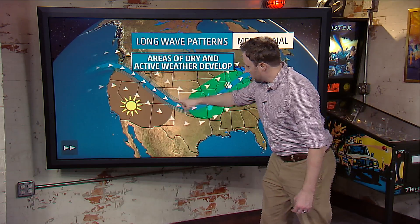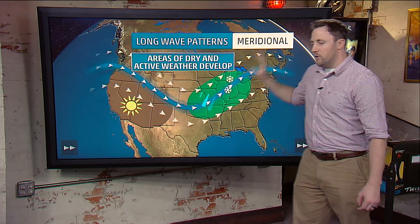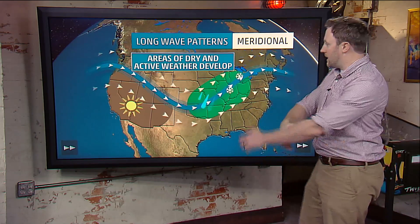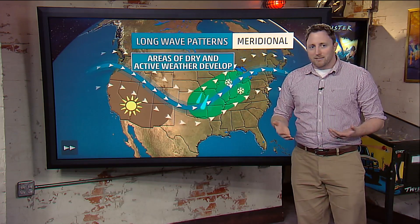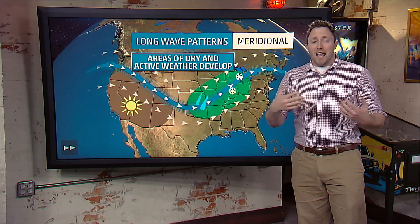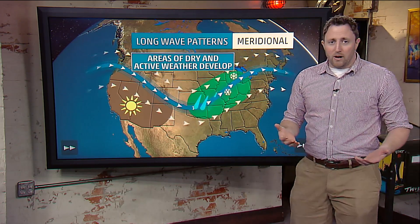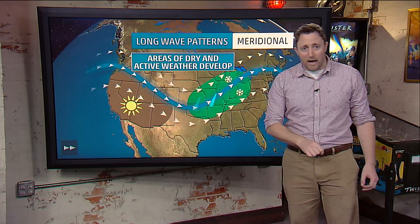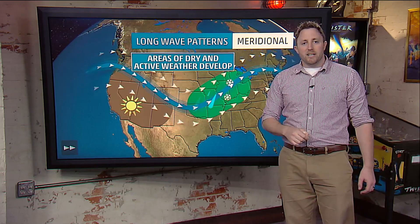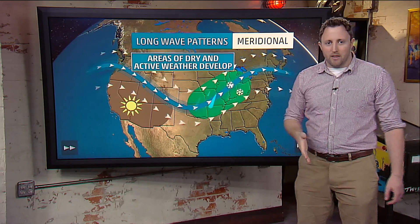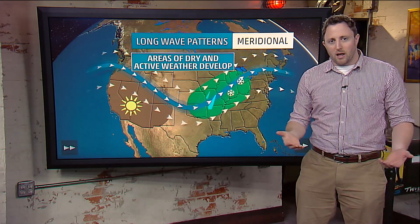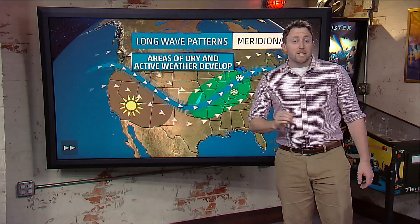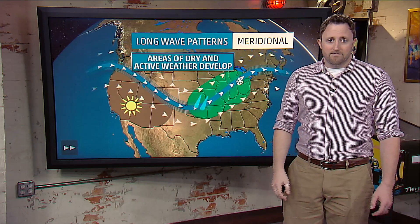You see those southerly dips and then it rises back north and we get different changes in the weather. We can get very dry areas and very active weather areas. That is called the meridional pattern because it follows the meridians — the north-south longitudinal lines on the earth. And that is how we get different patterns in our weather.